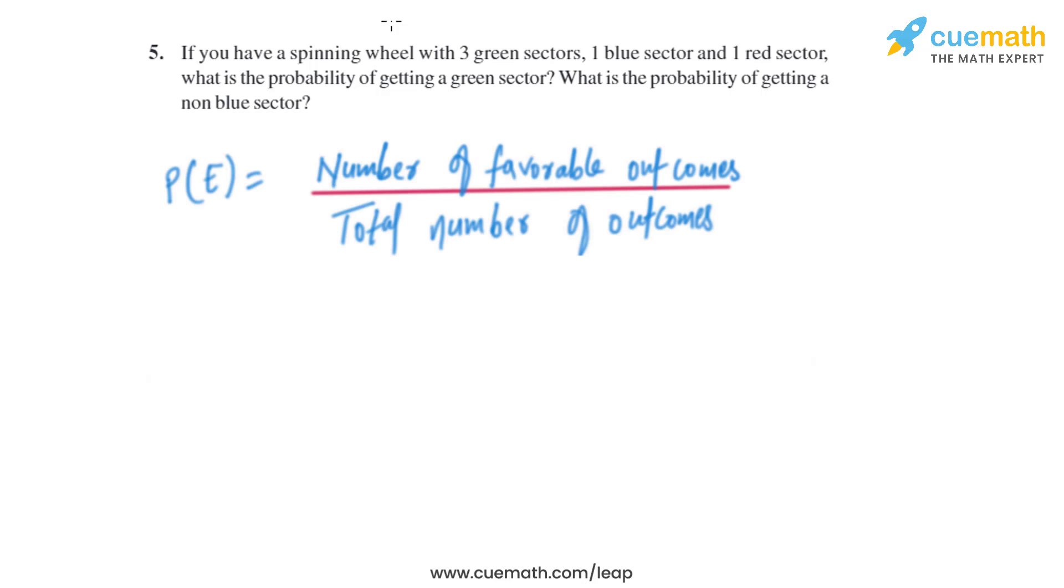We know that the probability of an event to happen is basically number of favorable outcomes divided by the total number of outcomes. So let's find the total number of outcomes. There are three green sectors.